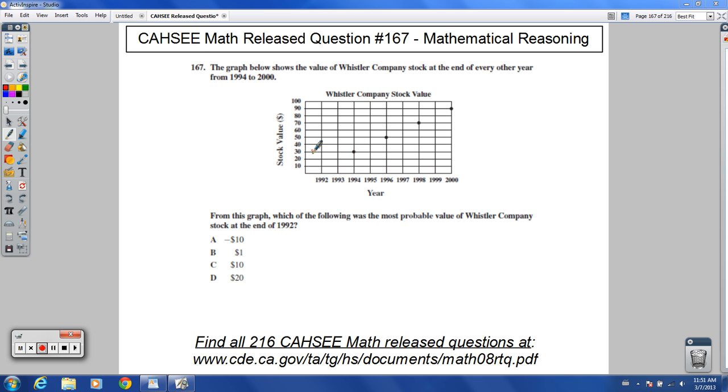So here's 94. It looks like that was at $30. 96, that was at $50. 98 is going across. That's at 70. 2000 going across. That's at 90.